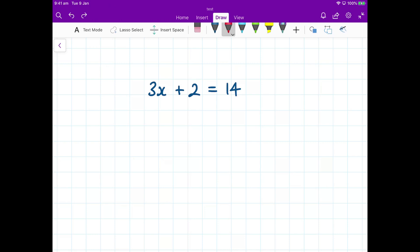To eliminate or get rid of the plus 2, we do the inverse operation. So the inverse, the opposite of adding 2, is to subtract 2. So I'm going to put subtract 2. Now, if I do something to the left hand side, I must also do it to the right hand side. So I have to subtract 2 here as well. And that will keep the equation balanced.